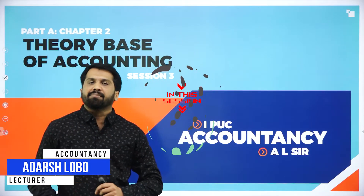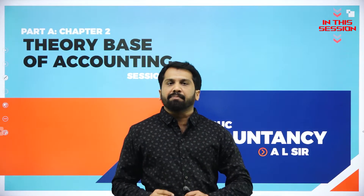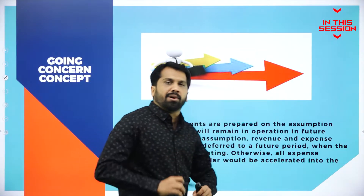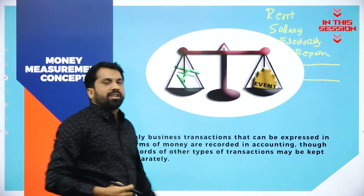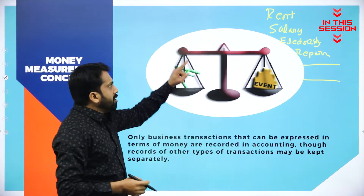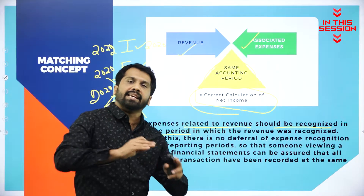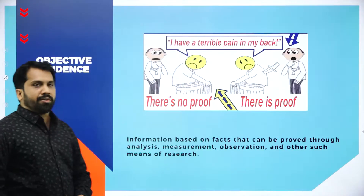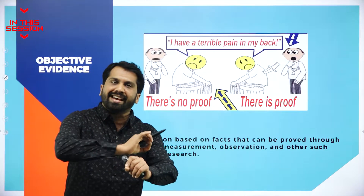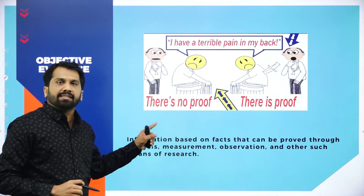Accounting period concept. Accrual concept. The first concept is called going concerned concept. Just add this and tell me what is the total of this. We are not supposed to consider next or previous year. Normally jewelry cannot be sold on loan. In accounting, if you want to record any transactions, you must have evidence.